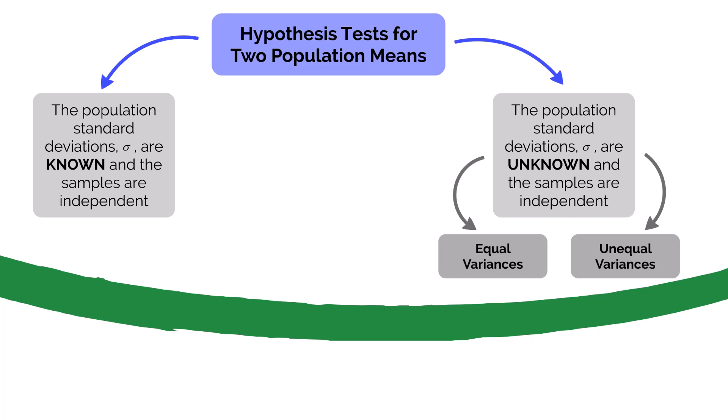On the left is when we know the population standard deviation, and on the right is when we don't know the population standard deviation. Note that sigma is the population standard deviation symbol, so when you're trying to identify the right type of hypothesis test to perform, make sure to look out if sigma is given in the problem. When we don't know the population standard deviation, we also need to identify if the variances are equal, as this determines which tool pack option you'll use in Excel.